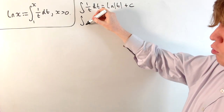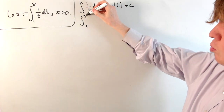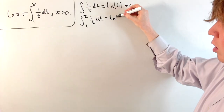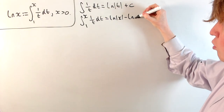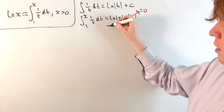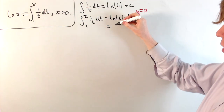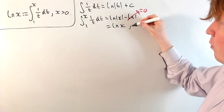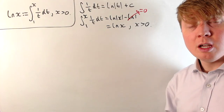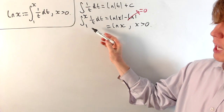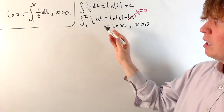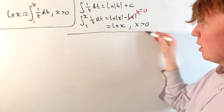If we make this into a definite integral, let's choose the limits between 1 and x. The reason we choose 1 is so that when we substitute it in, the natural logarithm of 1 is just 0, so subtracting it contributes nothing. If we impose x is positive, the modulus of x is just x, so we get the natural logarithm of x, and this is true for all x greater than 0. This also works for x between 0 and 1, where we'd swap the limits and introduce a negative sign.